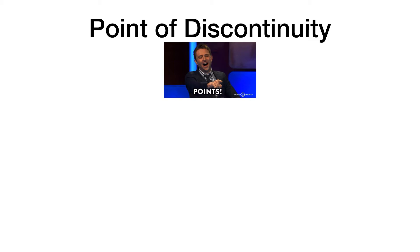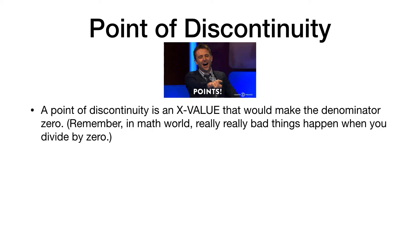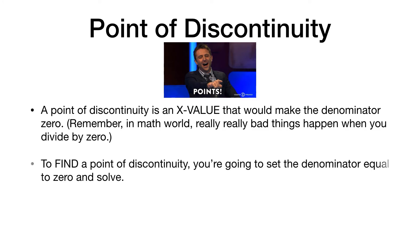Now let's talk about points of discontinuity. A point of discontinuity is the x values that make the denominator zero. We've been finding these the whole time — all the values that were undefined. In the past they've all been vertical asymptotes, but that may not always be the case. To find a point of discontinuity, we set the denominator equal to zero and solve, because we want to find where those zeros are — the points that just don't work.